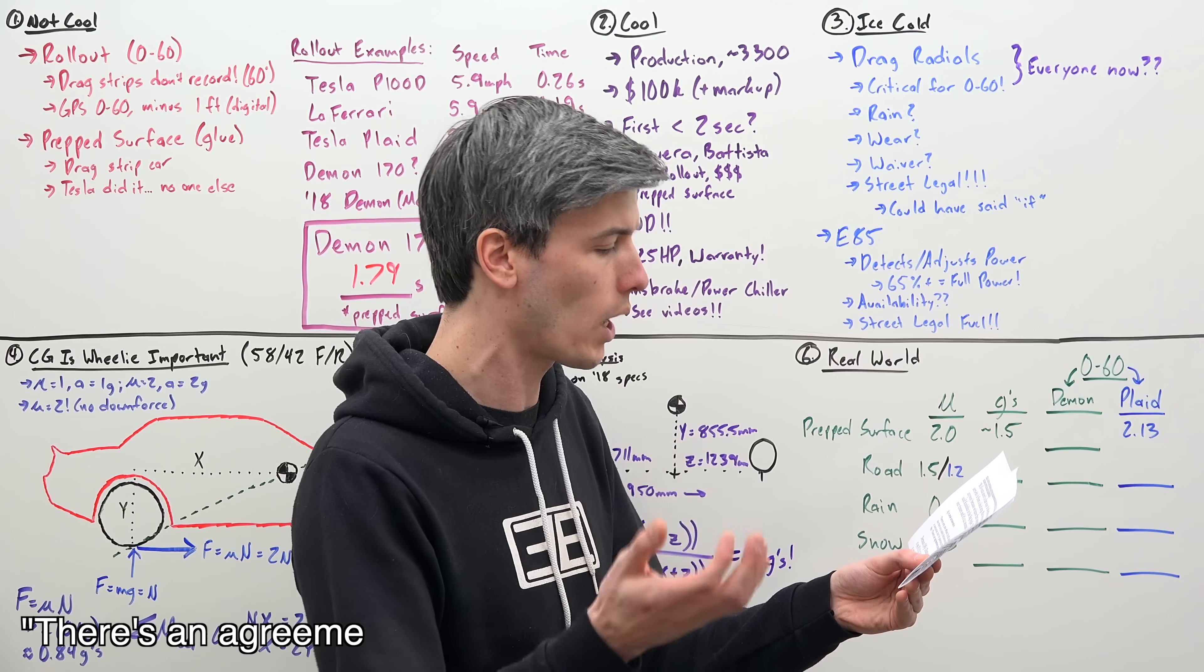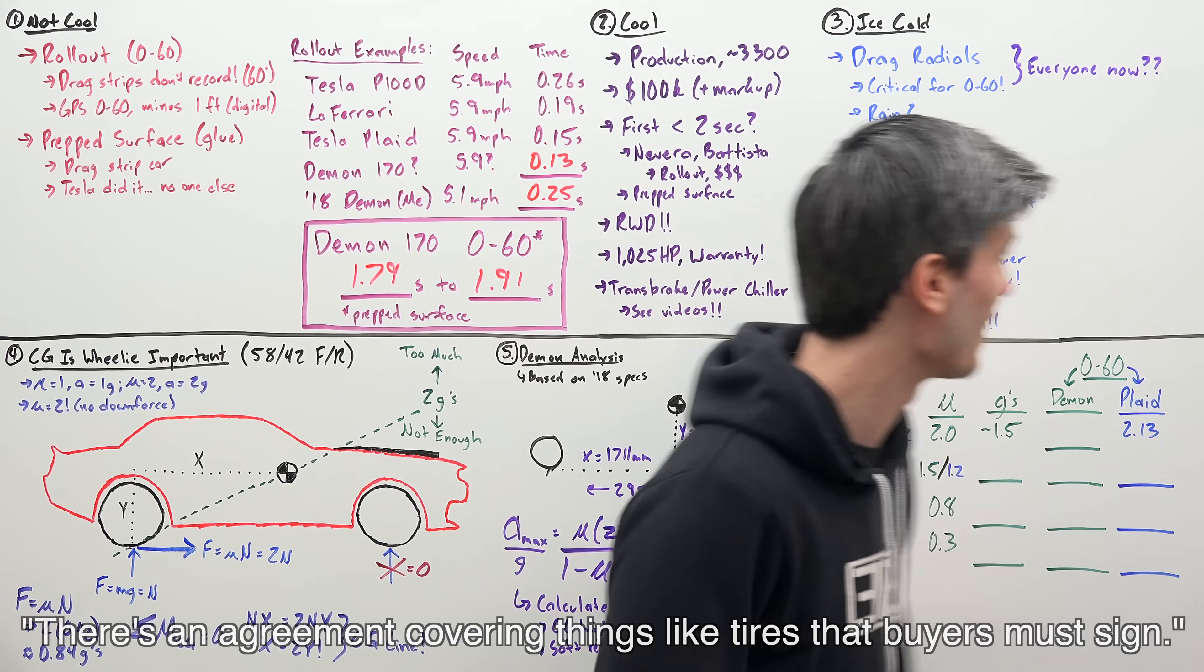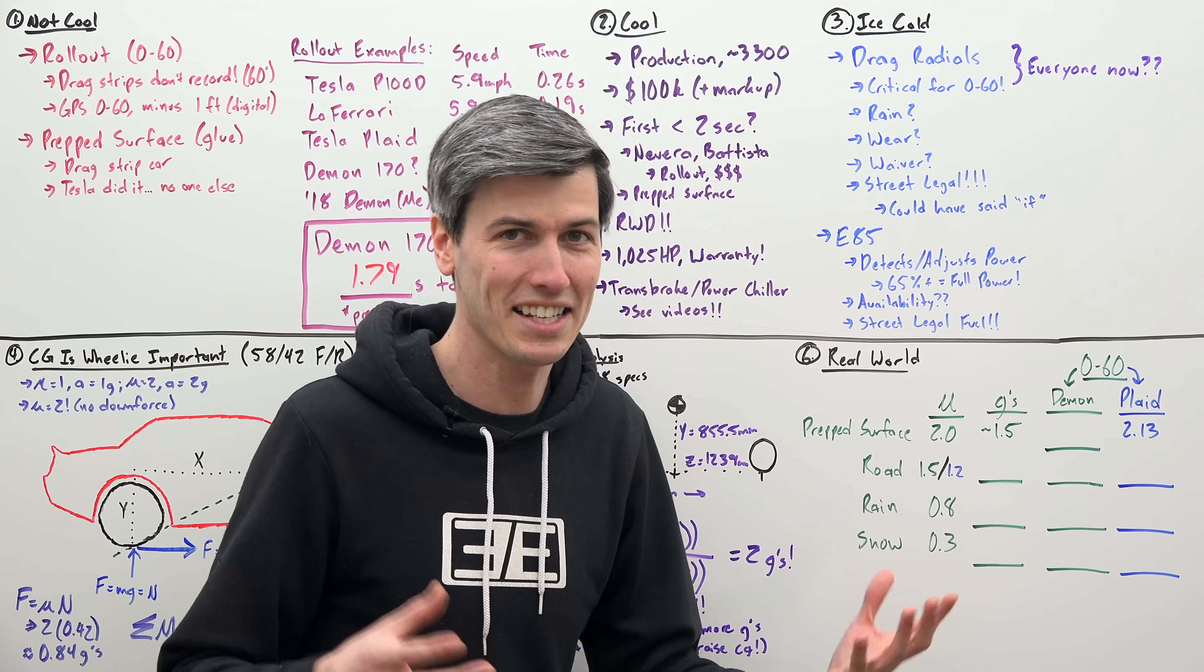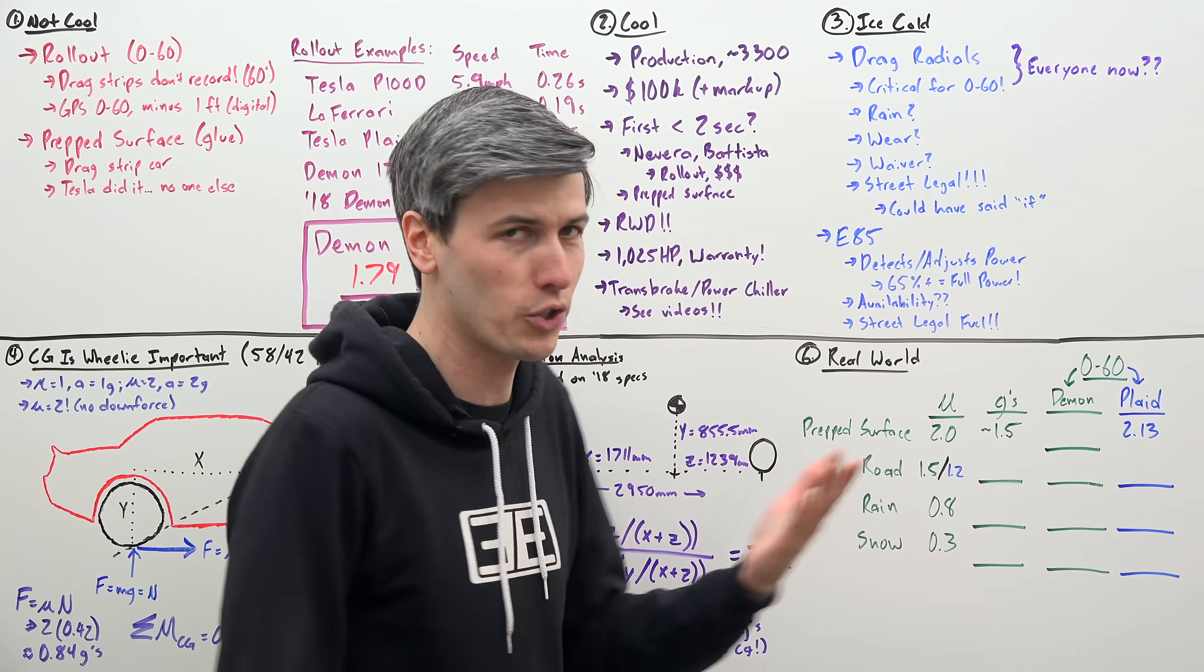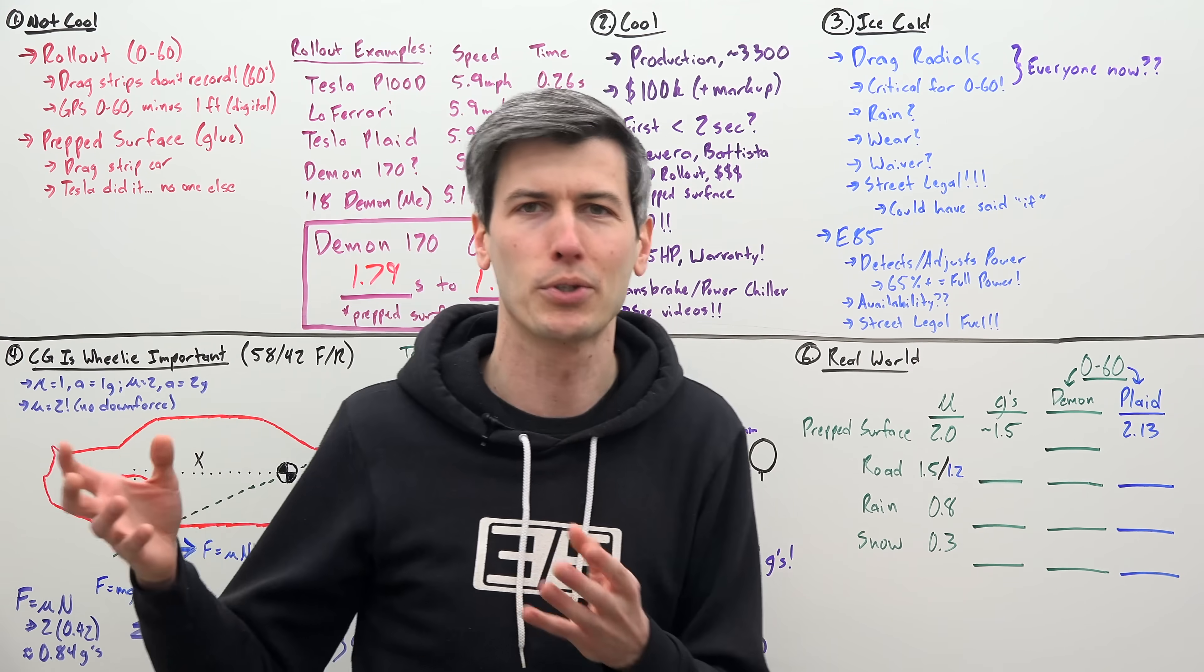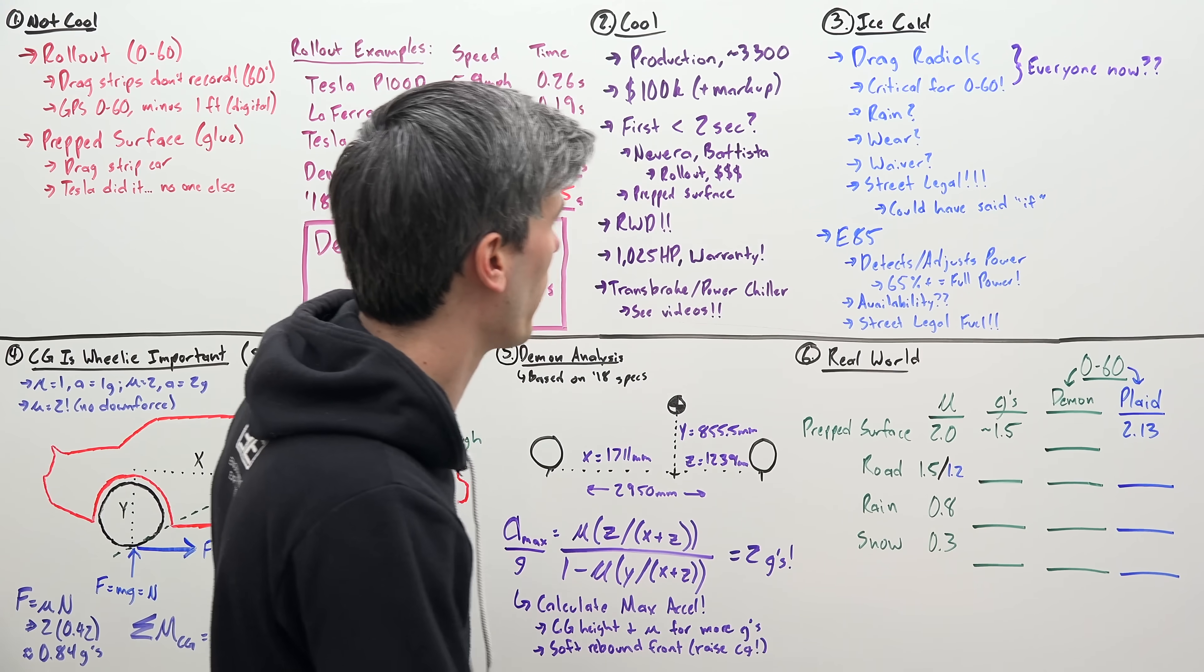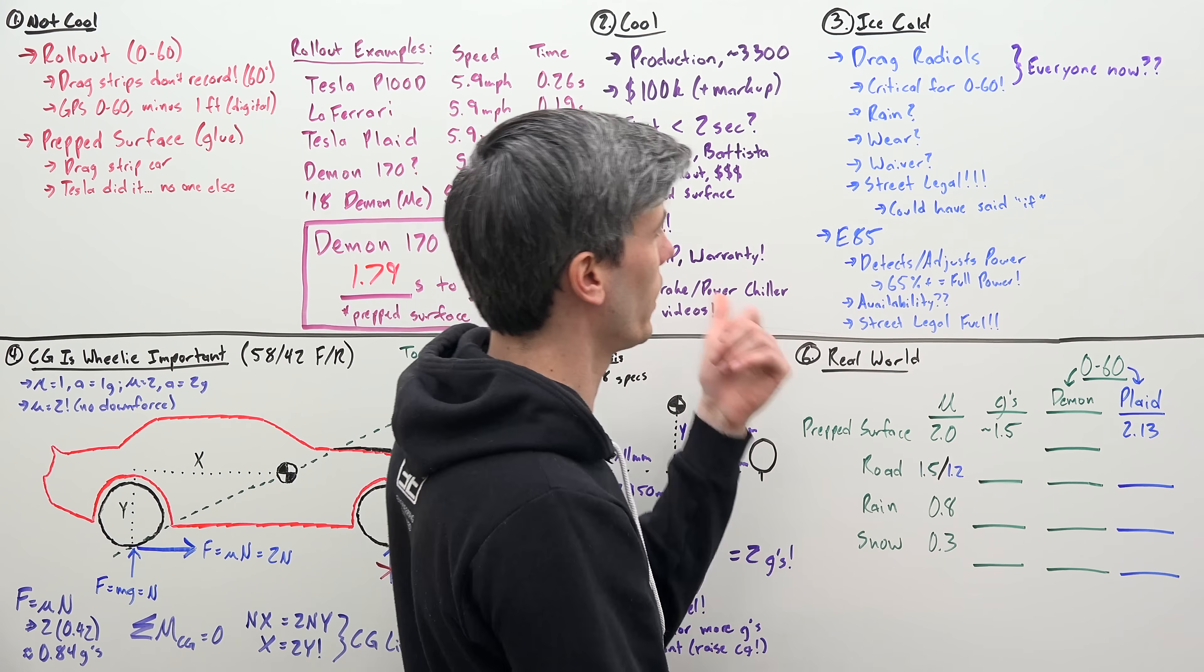Dodge tells me there's an agreement covering things like tires that buyers must sign. So regardless, it's an asterisk that goes along with this 0 to 60, but they're street legal. So in my opinion, it works. Now, does this mean everyone from now on is going to be offering an option for their cars to come with drag radials in order to hit that 0 to 60? I don't know, maybe, but regardless, Dodge did. I think it's cool.